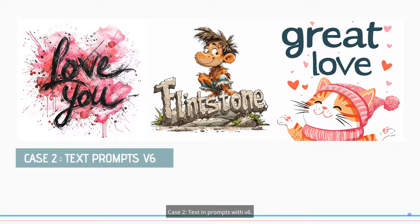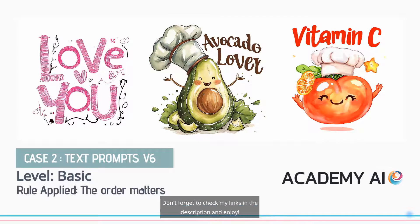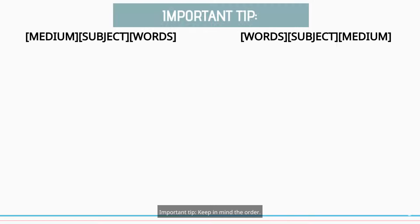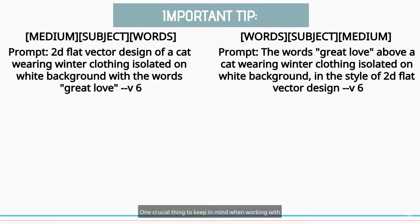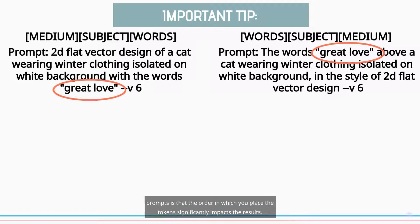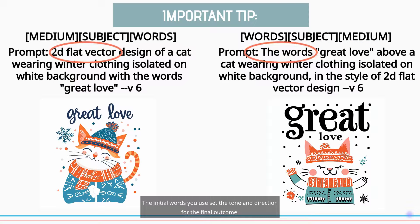Text in prompts with V6. The important rule applied here is that the order matters. One crucial thing to keep in mind when working with prompts is that the order in which you place the tokens significantly impacts the results. The initial words you use set the tone and direction for the final outcome.